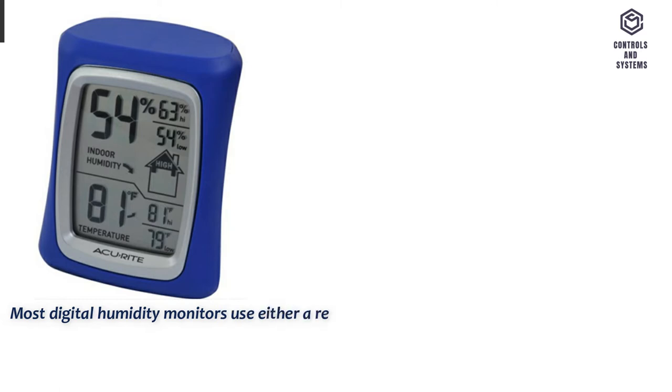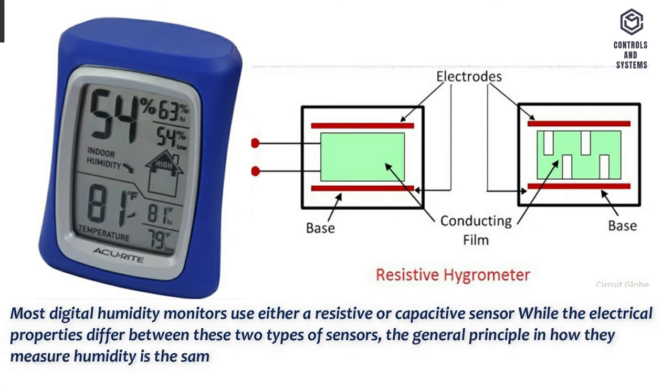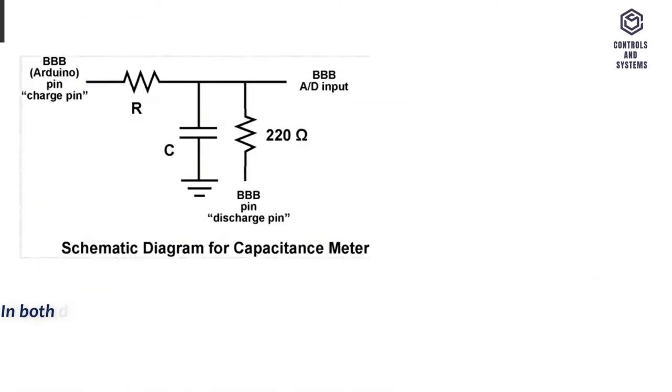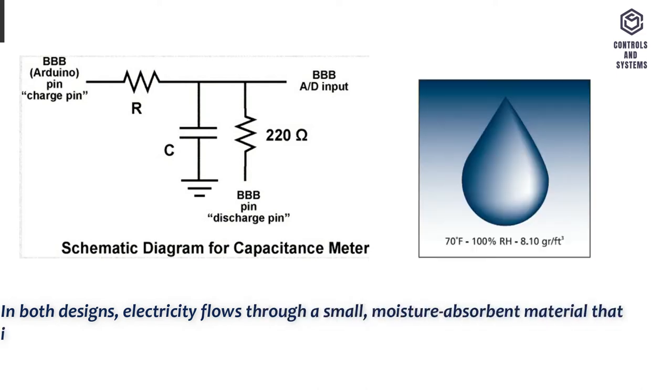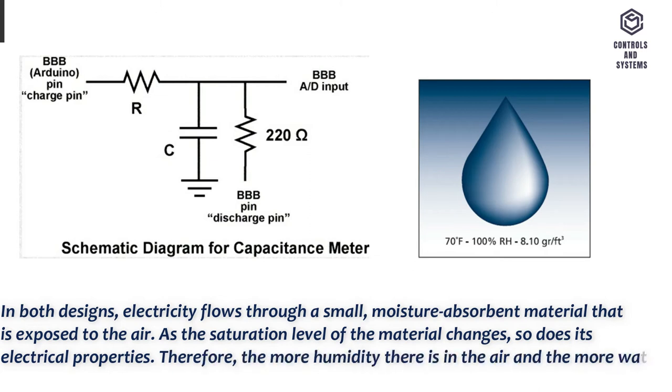Most digital humidity monitors use either a resistive or capacitive sensor. While the electrical properties differ between these two types of sensors, the general principle and how they measure humidity is the same. In both designs, electricity flows through a small, moisture absorbent material that is exposed to the air. As the saturation level of the material changes, so does its electrical properties. Therefore, the more humidity there is in the air, the more water vapor the material will absorb.